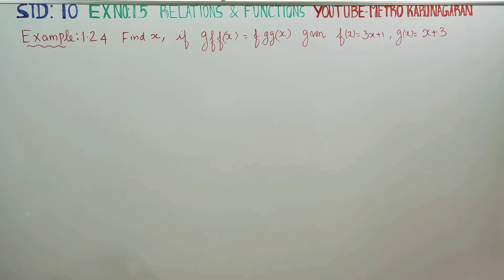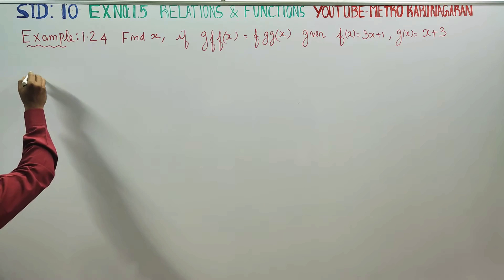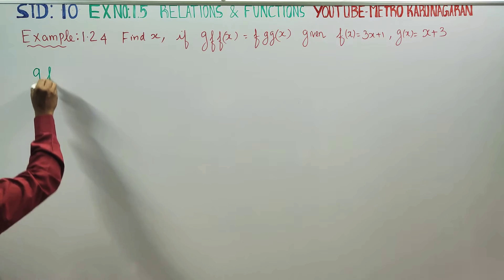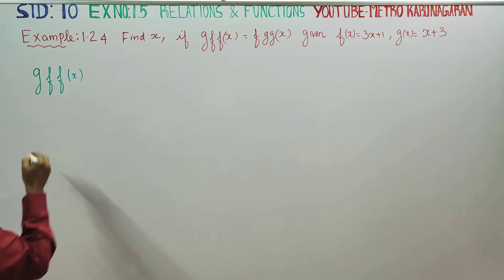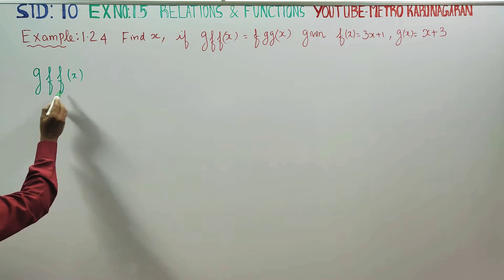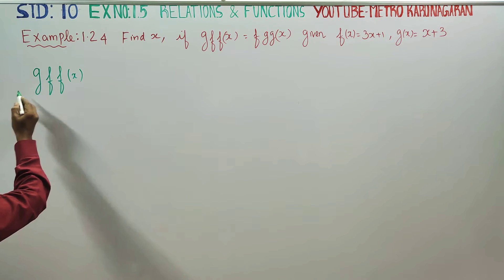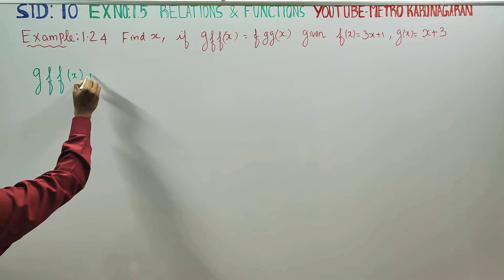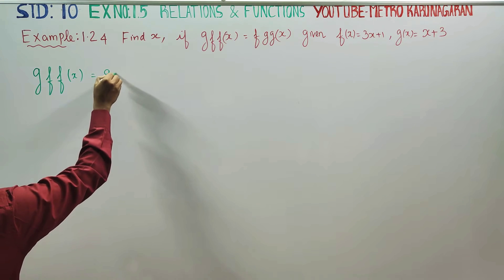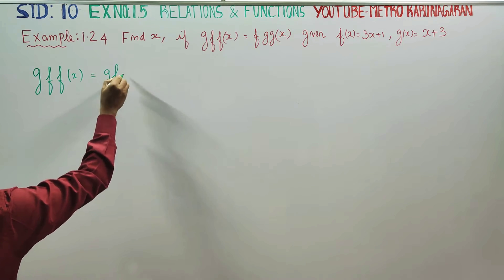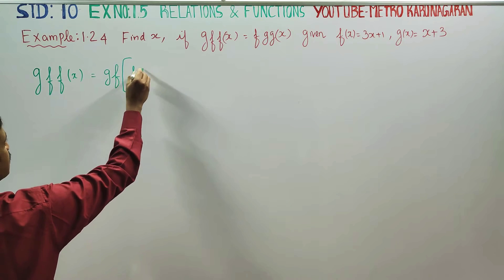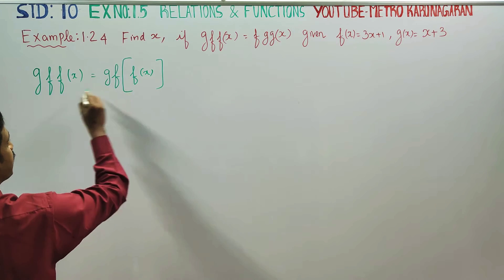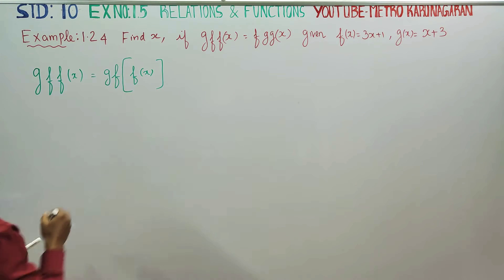I am going to start with g(f(x)). This is a composite function. You have to get the value of x — g(f(x)) is equal to f(x). Composition of functions.